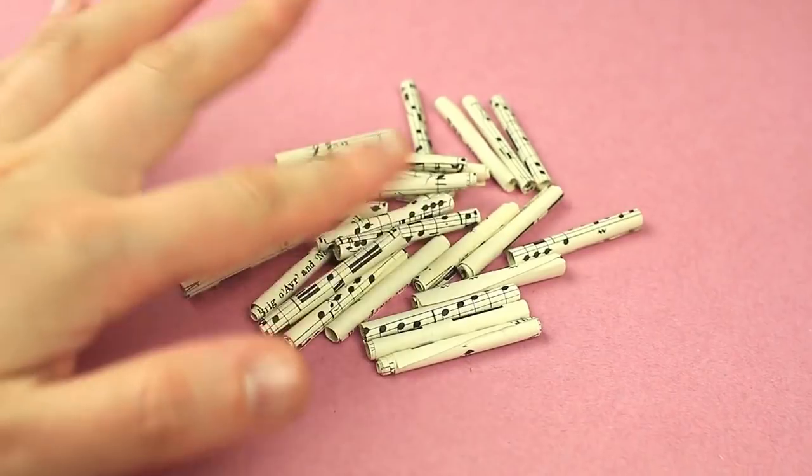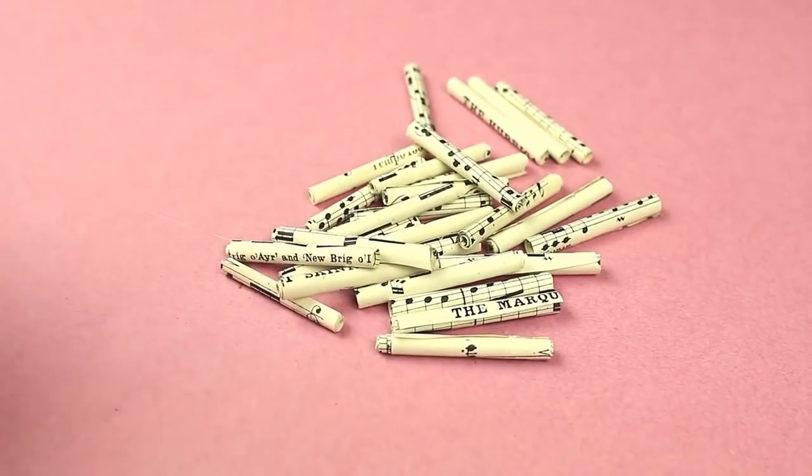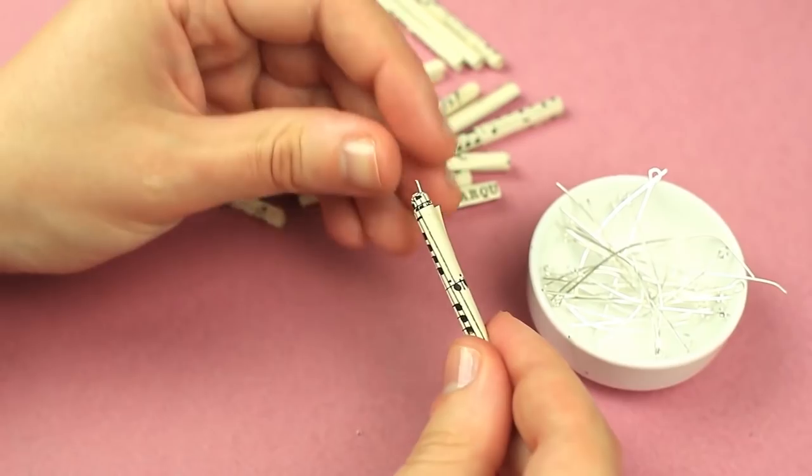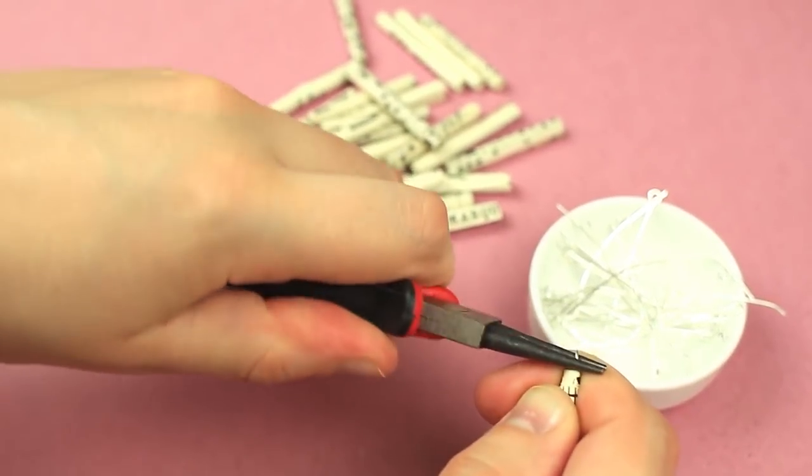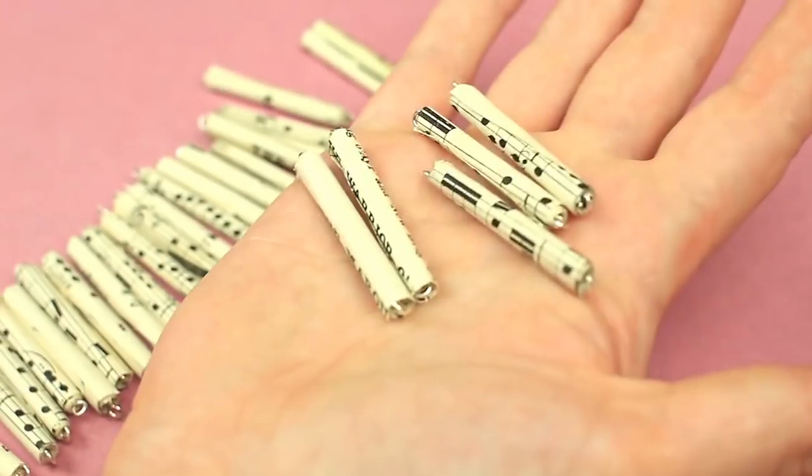Make other beads in the same way. We'll need 25-30 rolls to form a bracelet. Pass a pin through a bead and make a loop at the end. Repeat for the other beads.